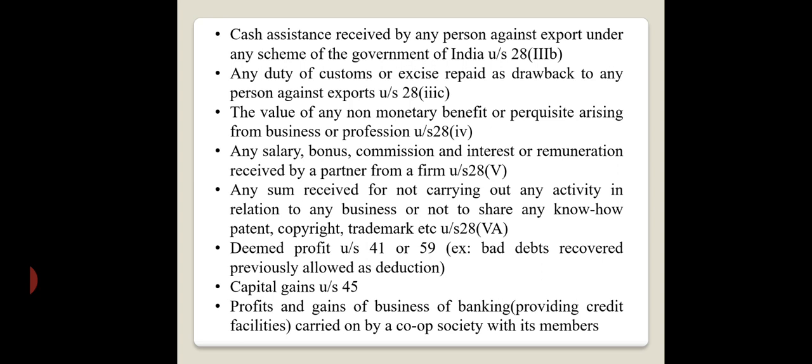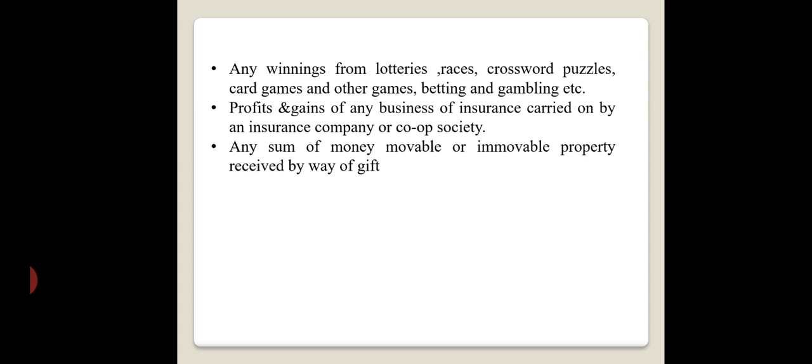Whatever the capital gain — whether short-term or long-term capital gain — it should be treated as income. Profit and gains of business of banking, any profit or income from banking business, including credit facilities carried on by a cooperative society with its members, is income. Any winnings from lotteries and income from other sources such as horse races, crossword puzzles, card games and other games also constitute income.